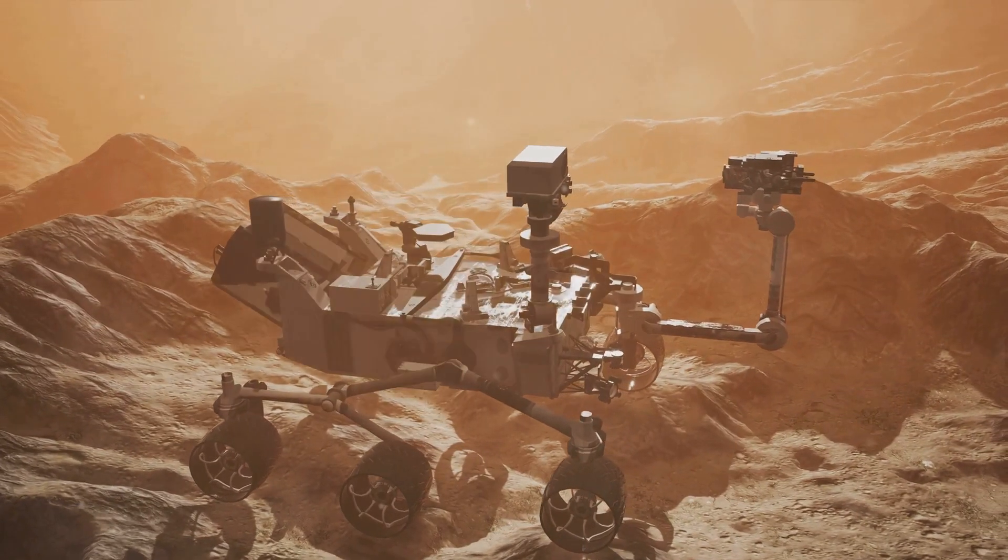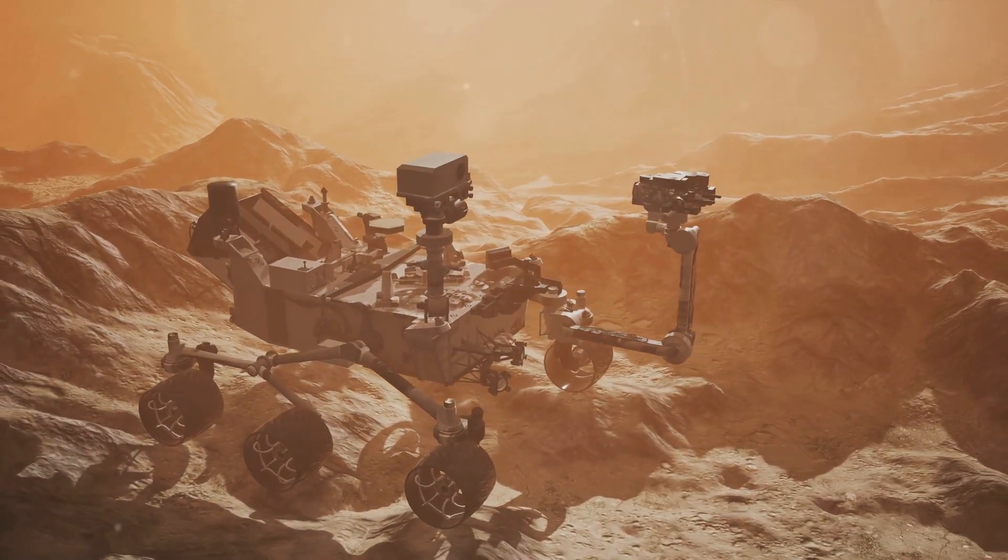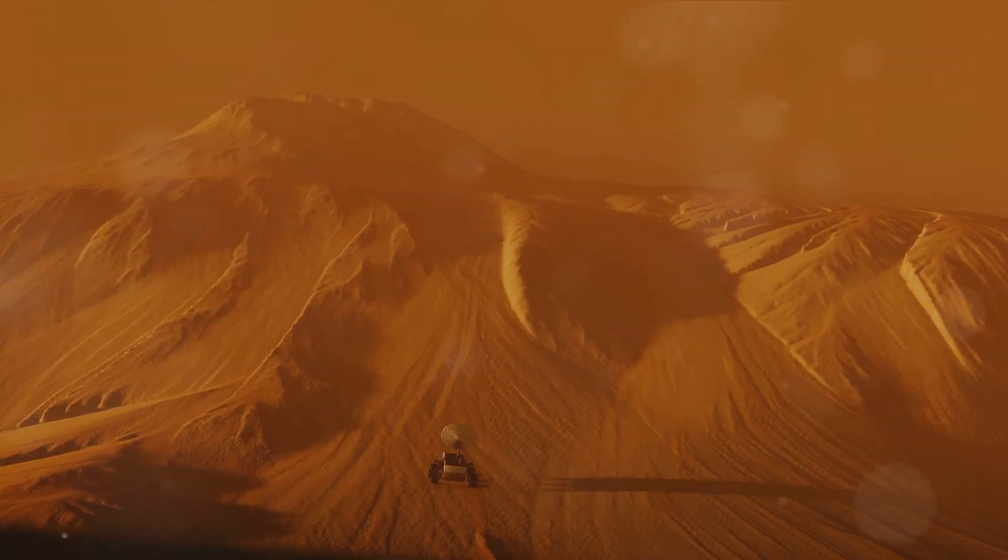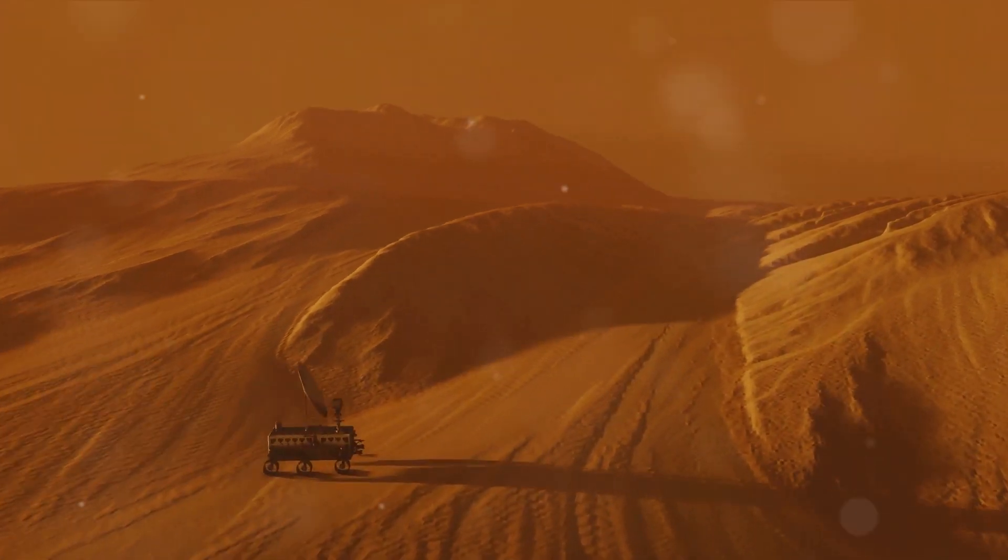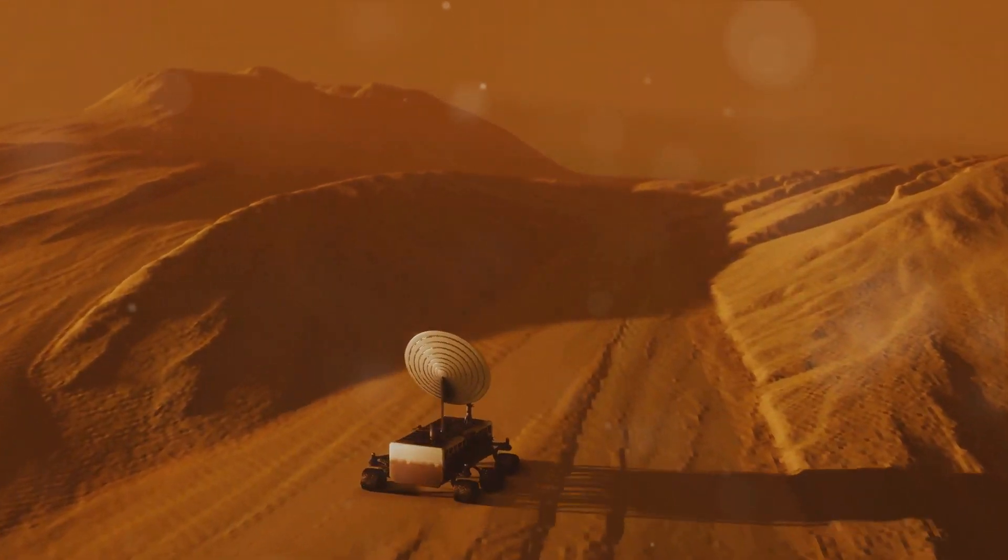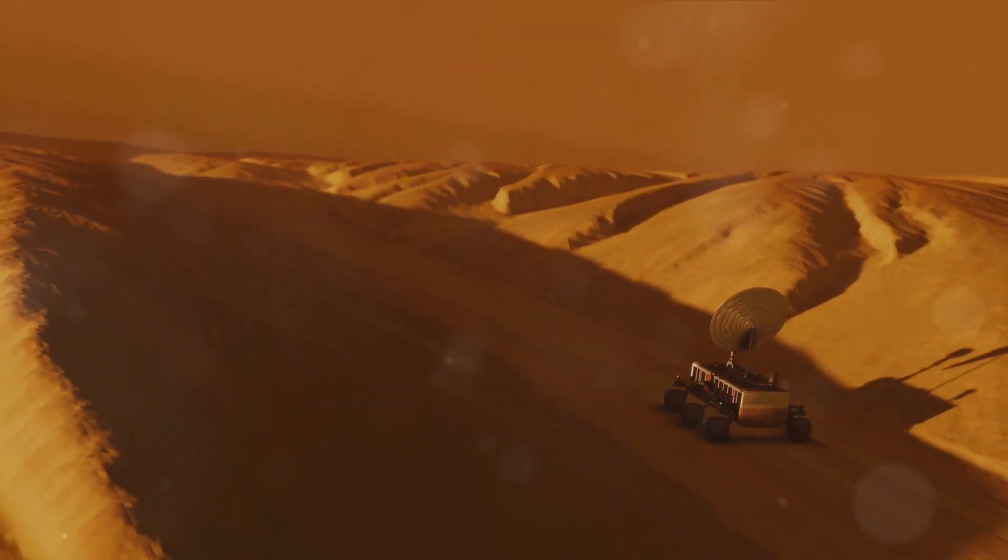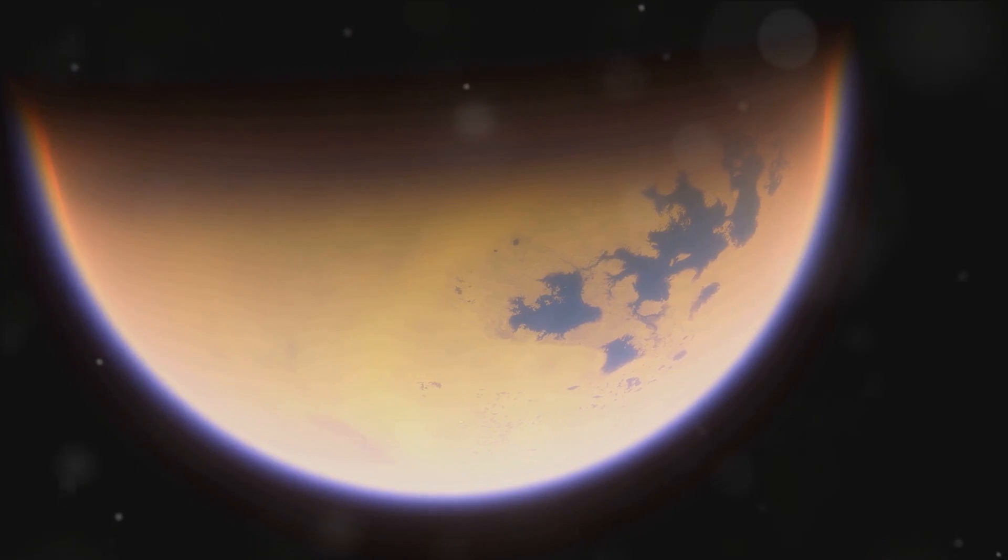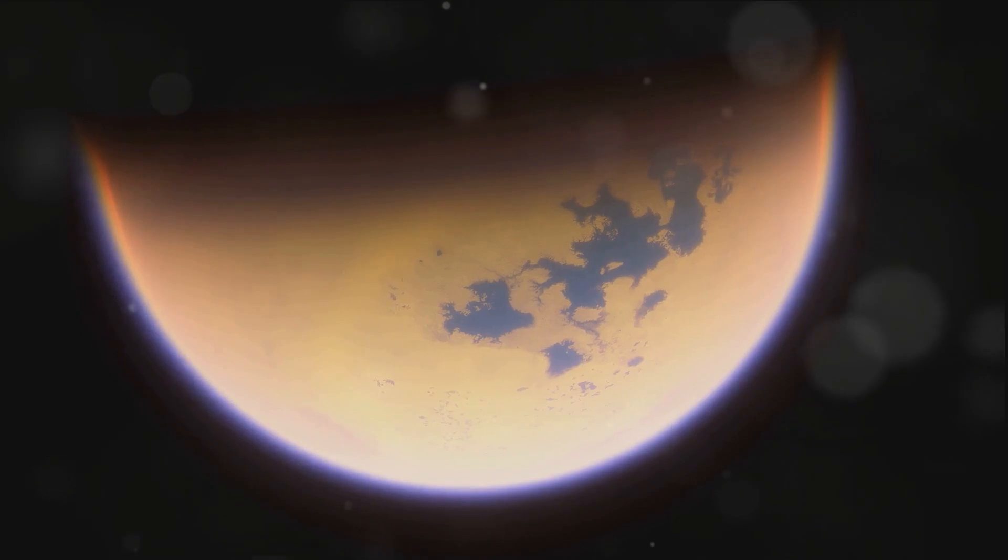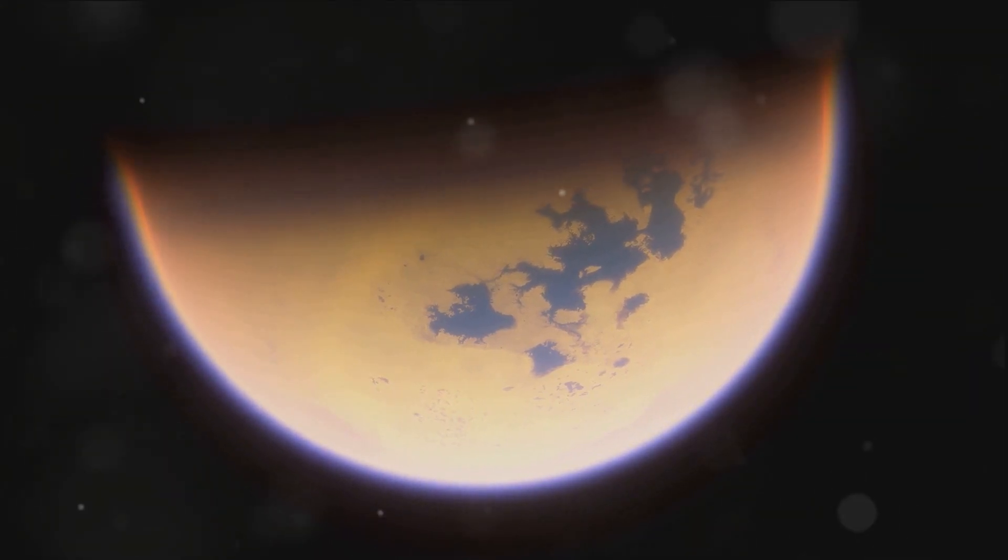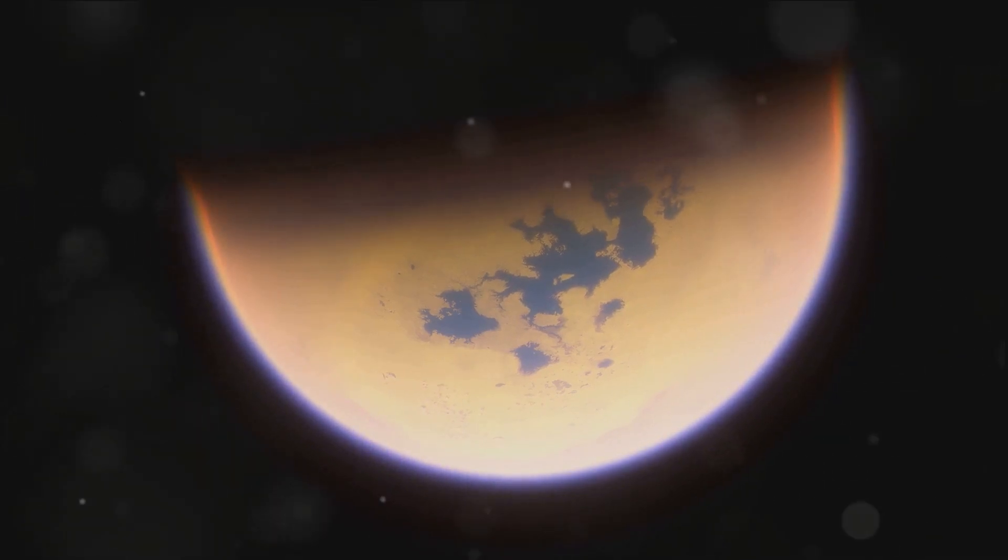Exoplanets in the Goldilocks zone, a region around a star where temperatures are just right for liquid water, are prime candidates. Mars, our neighboring planet, is also a potential contender with evidence of water in its past. Even moons like Enceladus and Europa, orbiting gas giants in our solar system, harbor subsurface oceans that could potentially host life. However, life as we don't know it might exist too. Scientists have proposed exotic life forms that could thrive in the methane lakes of Titan, Saturn's moon. These possibilities open up a whole new avenue in our search for extraterrestrial life.